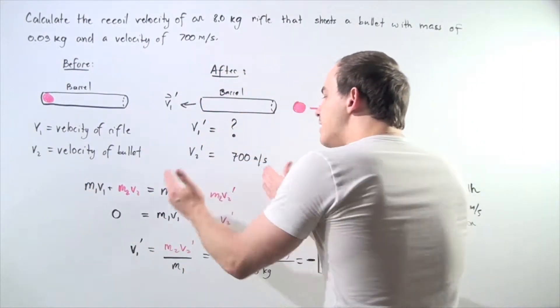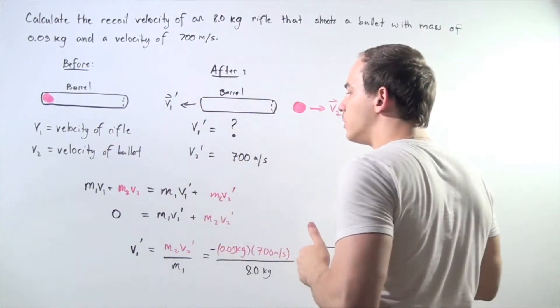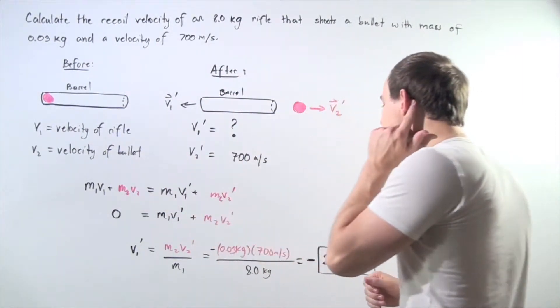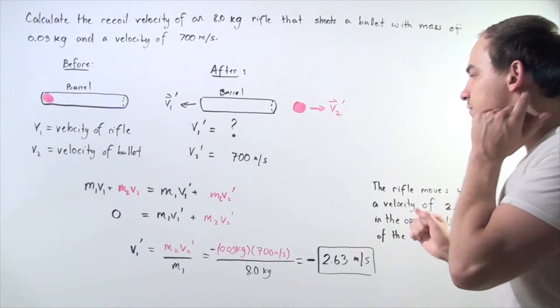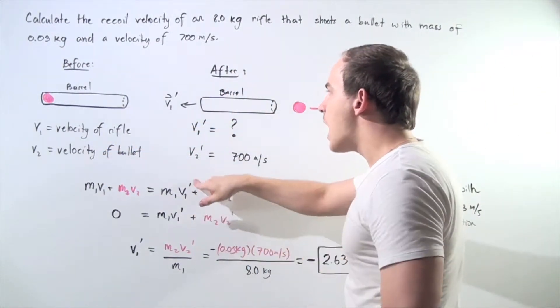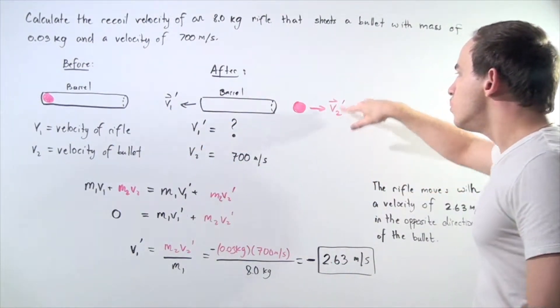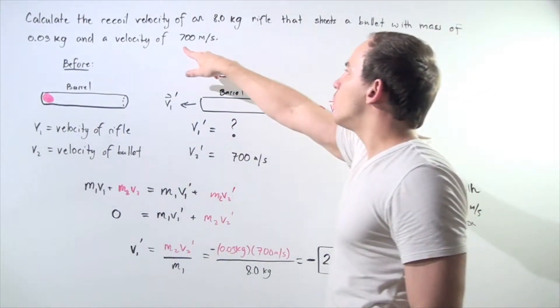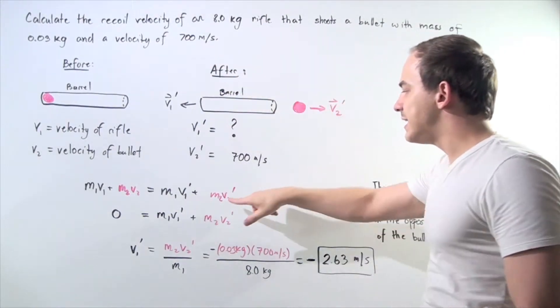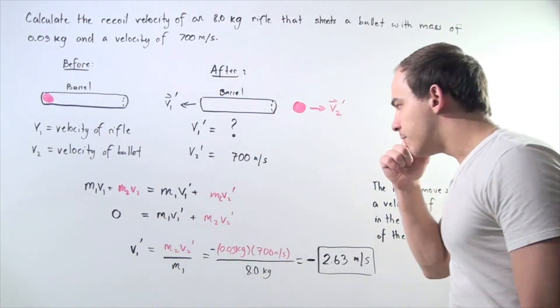After we shoot the bullet, if we sum up the momentum then, that should also give us 0. So we have the following equation where V1 prime is the recoil speed we're looking for and V2 prime is 700 meters per second, the speed with which the bullet leaves the barrel of the rifle.